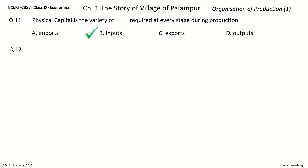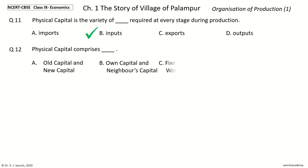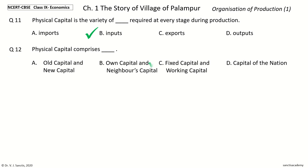Question 12: Physical capital comprises dash. The options are own capital and new capital, own capital and neighbor's capital, fixed capital and working capital, or capital of the nation. The answer is fixed capital and working capital. So, physical capital comprises fixed capital and working capital.